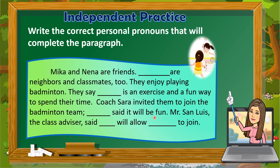First sentence: 'Mika and Nena are friends.' We are referring to Mika and Nena, so the appropriate personal pronoun is 'they.' Continue: 'They are neighbors and classmates too. They enjoy playing badminton.' For the second blank, the antecedent is 'badminton,' so we replace it with 'it.' 'They say it is an exercise and a fun way to spend their time.'